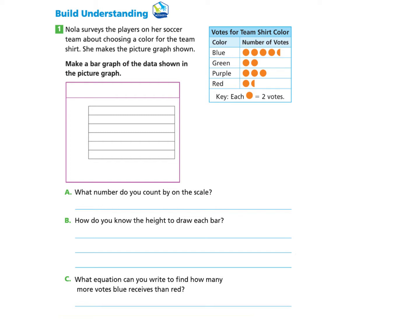We will start under Build Understanding, part one. Nola surveys the players on her soccer team about choosing a color for the team shirt. She makes the picture graph shown. Make a bar graph of the data shown in the picture graph.